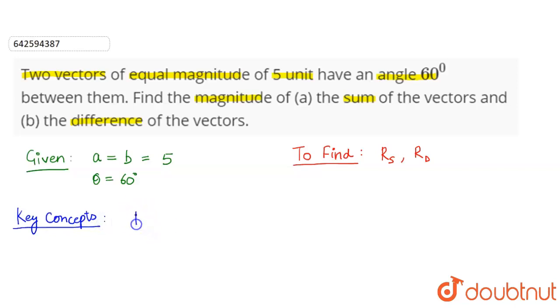The formula for resultant for the sum of the two vectors is given as square root of A squared plus B squared plus 2AB cos theta, where theta is the angle between two vectors A and B.